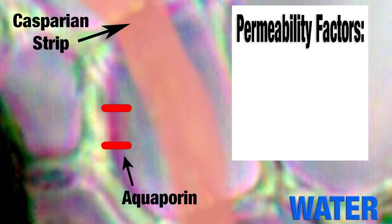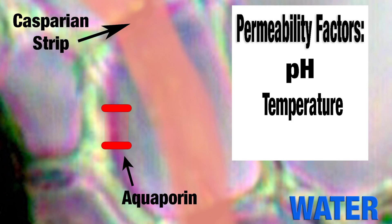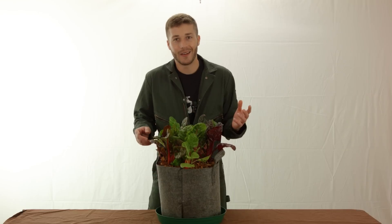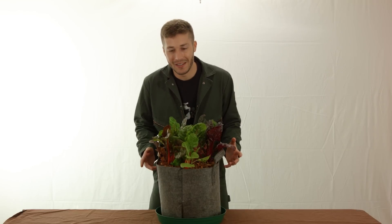The permeability of these aquaporins is affected by several factors, including pH, temperature, and oxygen. Now, plants do release oxygen, but that's mostly around their leaves. At their roots, they breathe in oxygen.